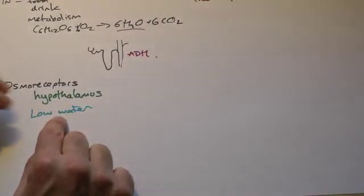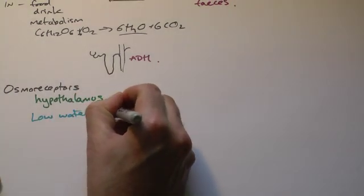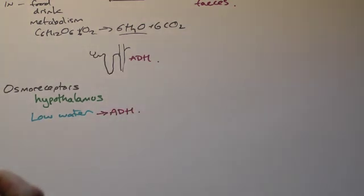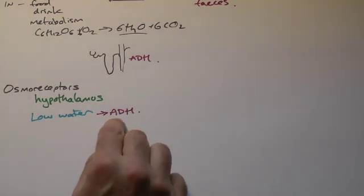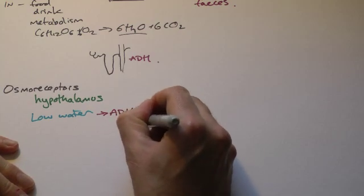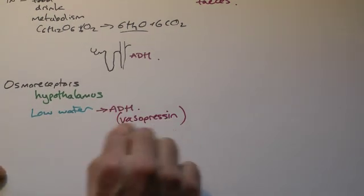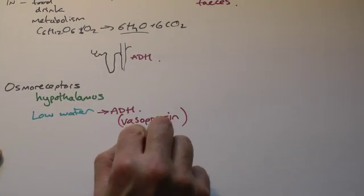And the way we prevent it is by trying to shut down or lower the amount of urine we produce, because we lose quite a bit of water through this. So, if we have low water, we release ADH, anti-diuretic hormone. You might come across it, if you're looking at this stuff on the internet, being called something called vasopressin.